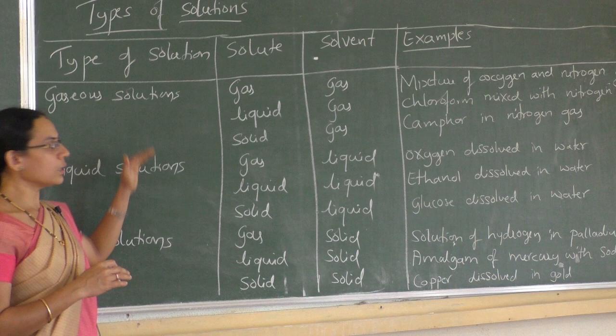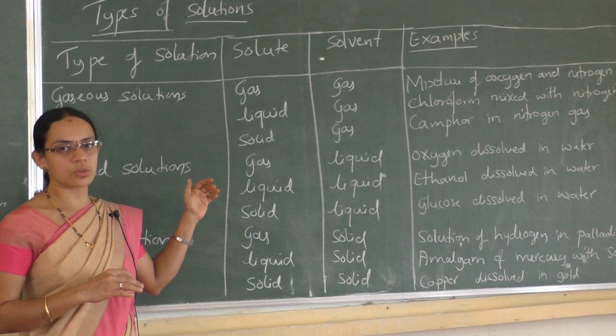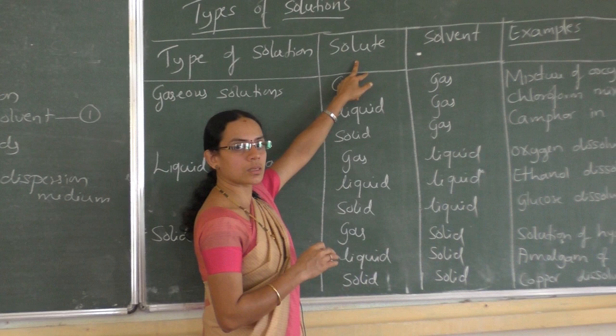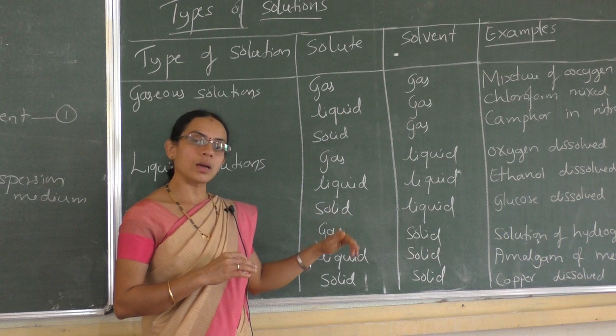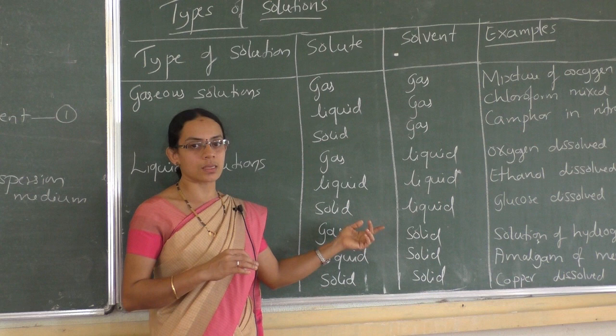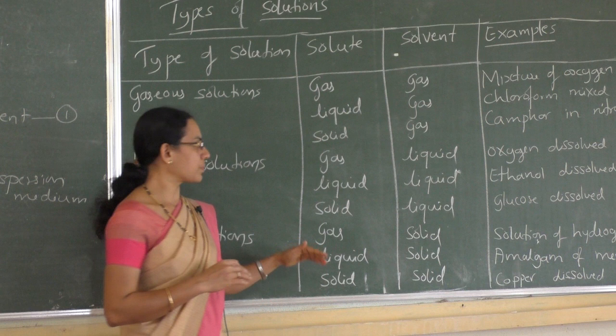So these are the nine types of solutions. In colloids, we have eight types — we replace solute with dispersed phase and solvent with dispersion medium. Since colloids are heterogeneous mixtures, a mixture of gas and gas is not considered a colloid as it becomes a homogeneous mixture.